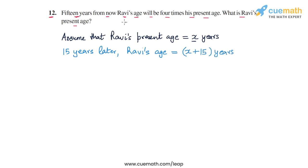And we are now told that 15 years from now Ravi's age will be four times his present age, which is x. So using this we can now translate this into an equation.